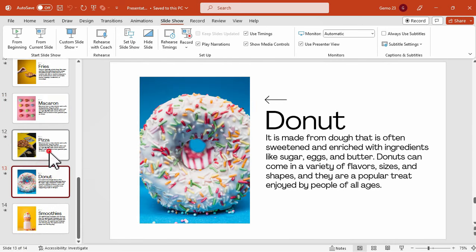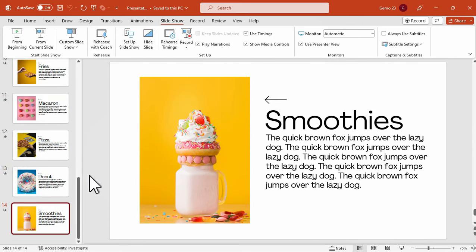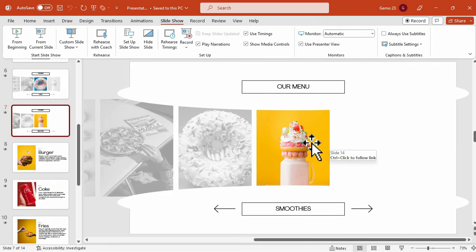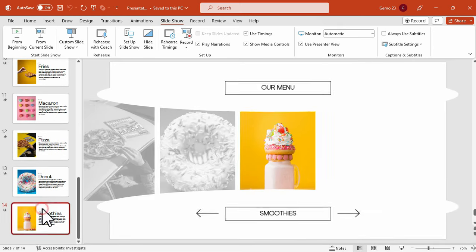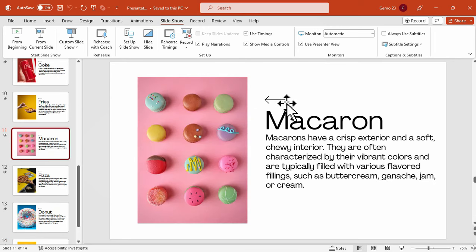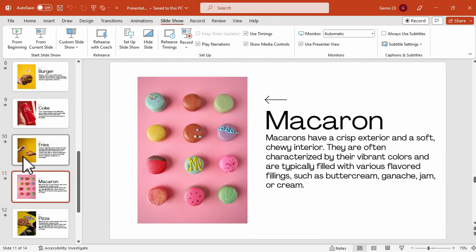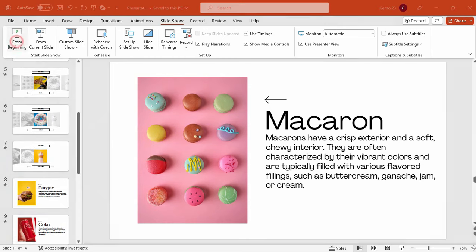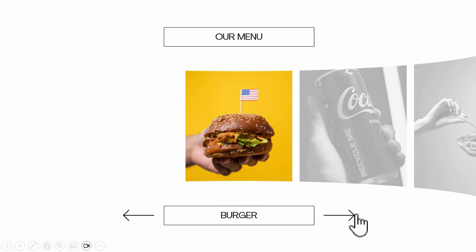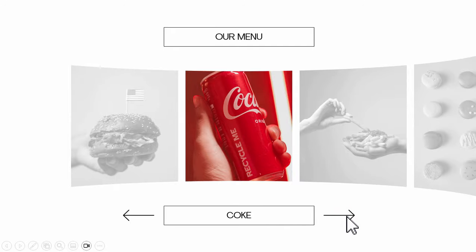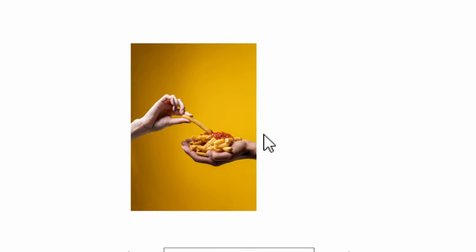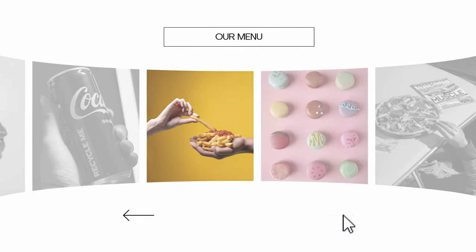Fast-forwarding this tutorial, I already finished setting up the information. For the Smoothie, the arrow icon will go back to slide 7 once clicked. For the Macaron, once you click the icon it will go back to the carousel effect where the macaron photo is at the center. And here is the final output for this tutorial — the carousel effect animation in Microsoft PowerPoint using the morph transition and the hyperlink function.